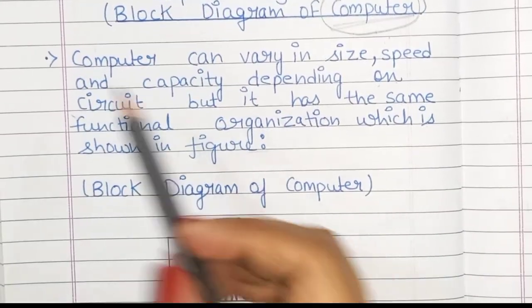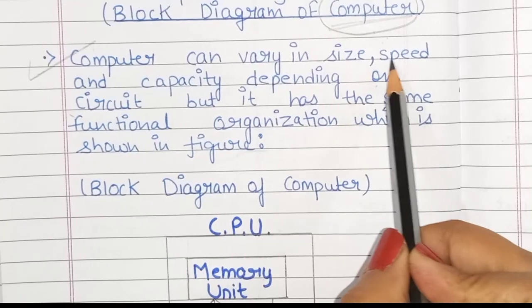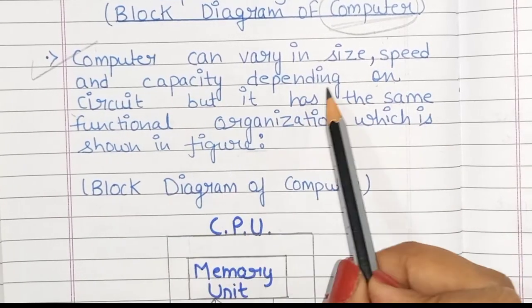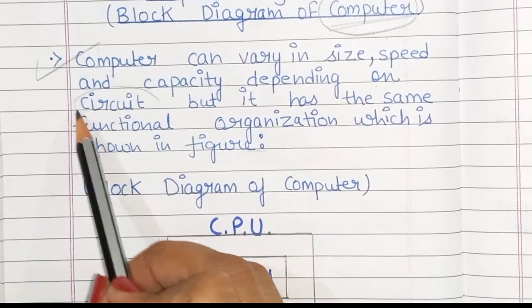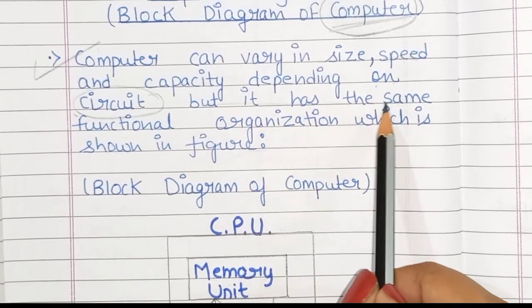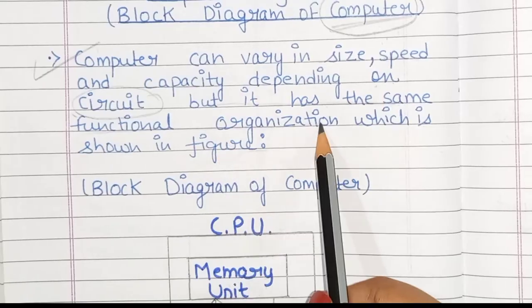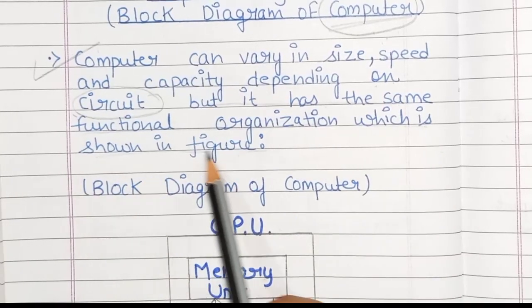Computers can vary in size, speed and capacity depending on the circuit, but they all have the same functional organization, which is shown in the figure.